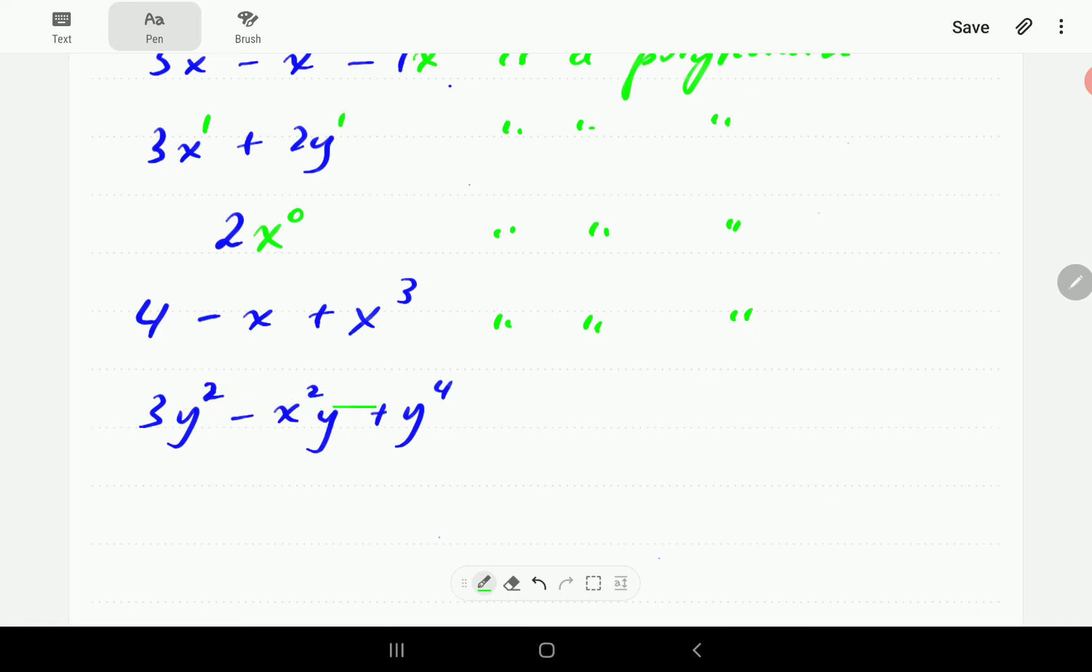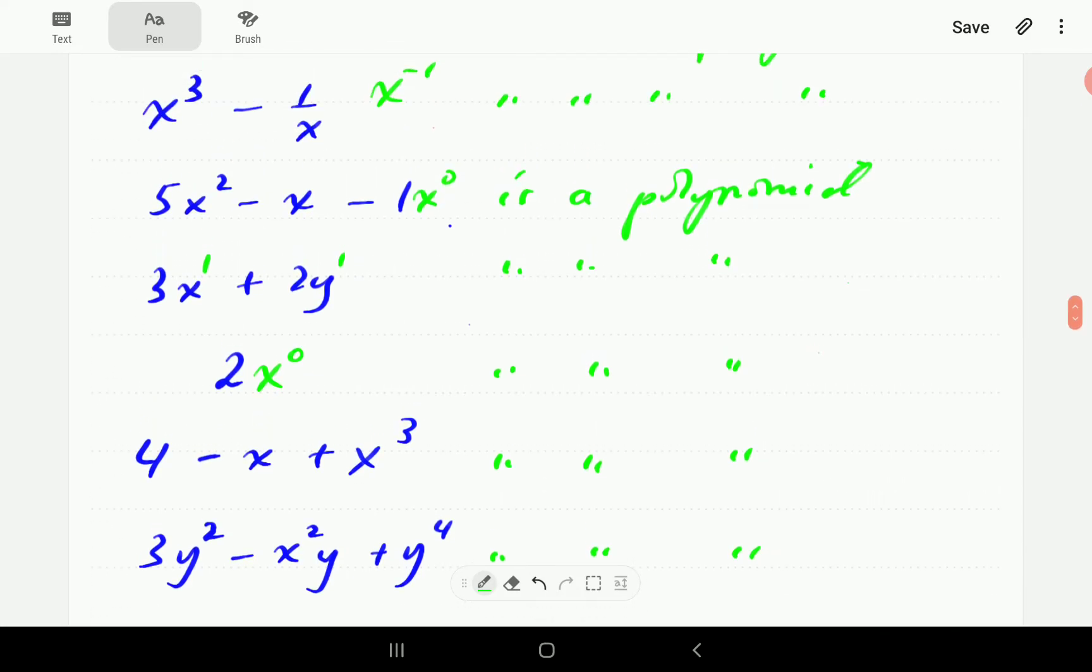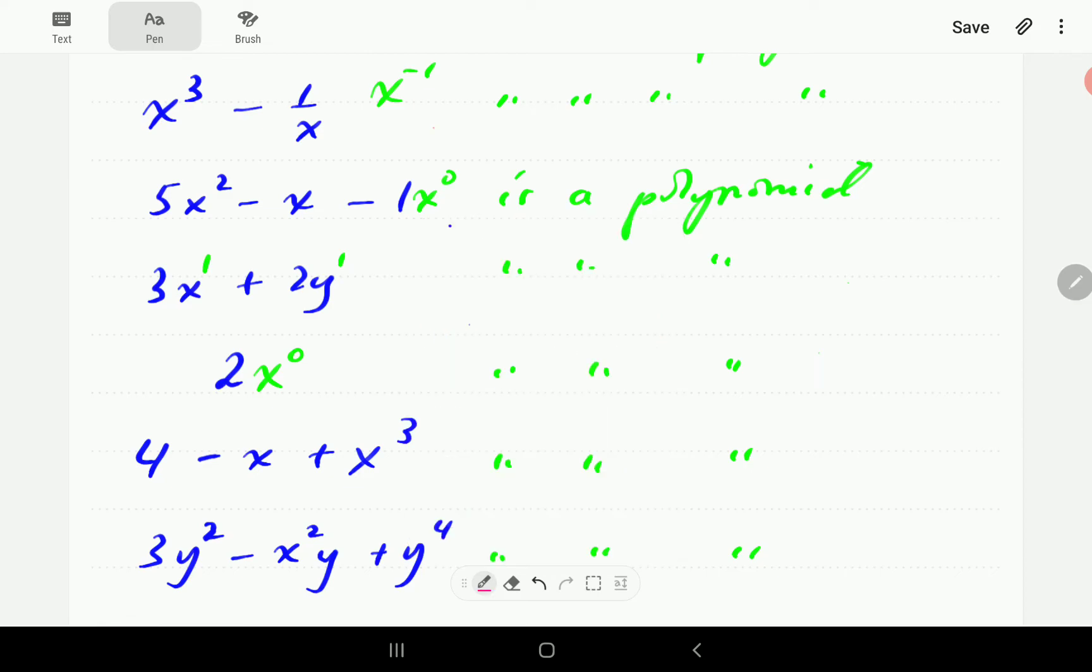Because we've got power 2 here, 1, and sorry, 2 and 1 here, and then 4 here. So this is a polynomial. Now, some of the polynomials have got special terms that we use to refer to them. So let's just go through some of them.